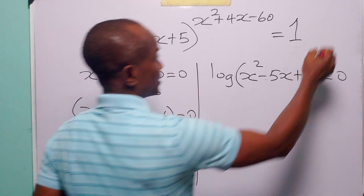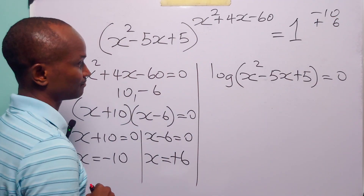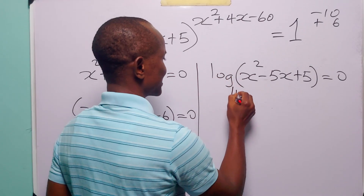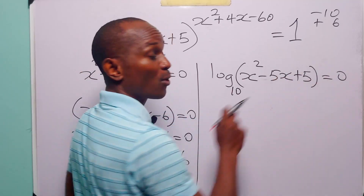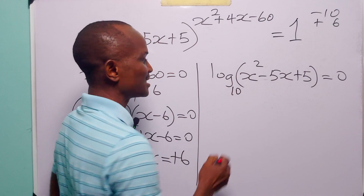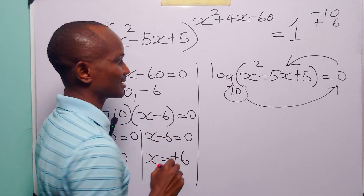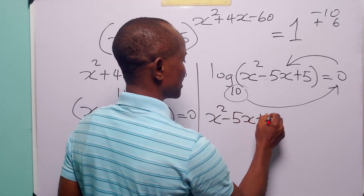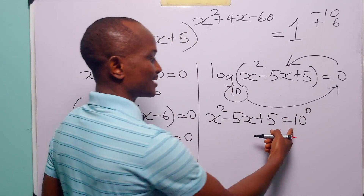Subtracting 10 from both sides gives x = -10, and from x - 6 = 0 we get x = +6. So we have two roots: -10 and +6. Now coming over to the second equation: log base 10 of (x² - 5x + 5) = 0. This means 10⁰ = x² - 5x + 5.